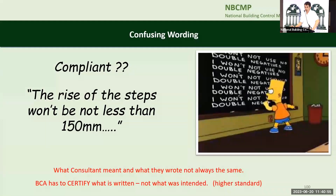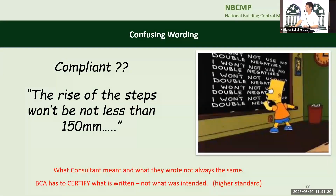Confusing wording example: 'the rise of the steps won't be not less than 150 millimetres.' Is that right or wrong? Even if it's right, you had to stop and think about it. So why didn't you use the correct wording? What the consultant meant and what they wrote isn't always the same thing. Sometimes I was sure consultants thought I was being picky when I went back and corrected their grammar, but it's because what they wrote wouldn't have held up in court. If I tried to argue the toss on something, it wouldn't be with the consultant — it'd be with the builder. If there's ambiguity, the builder will argue with you. Don't take anything less enforceable than the technical guidance document.